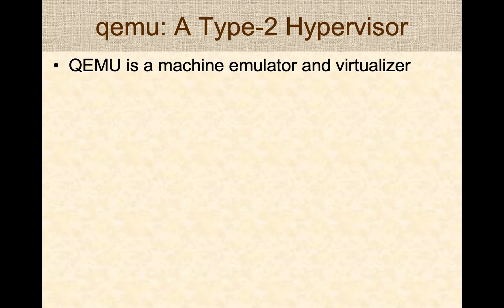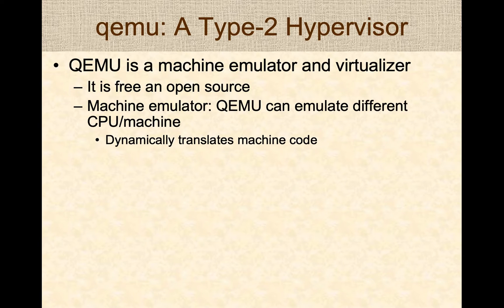QEMU is a Type 2 hypervisor. It is a machine emulator and a virtualizer. It is free and open source, so you can freely download and use it. As a machine emulator, QEMU can emulate different kinds of CPUs or machines — Intel, ARM, AMD — and it uses dynamic instruction translation to dynamically translate the host instructions to the instructions on the native CPU.